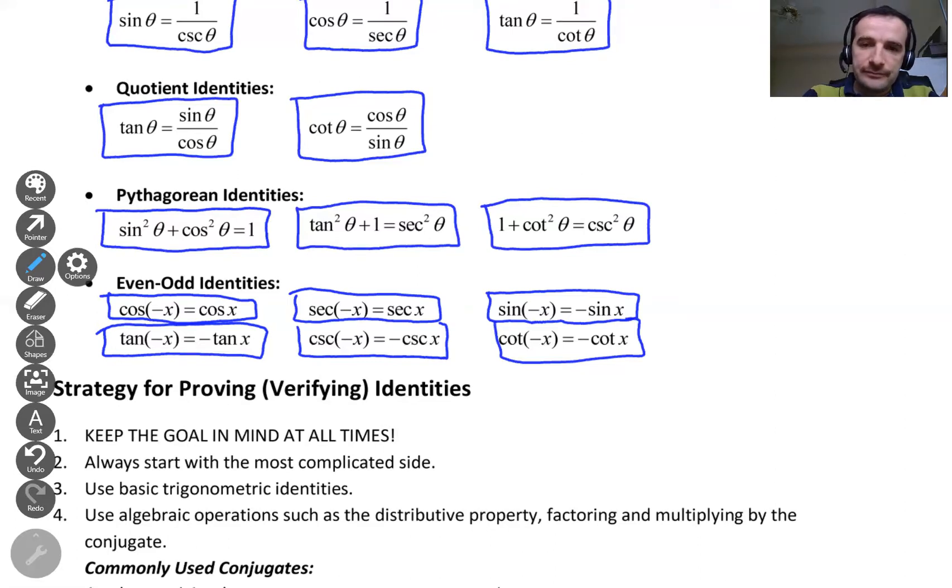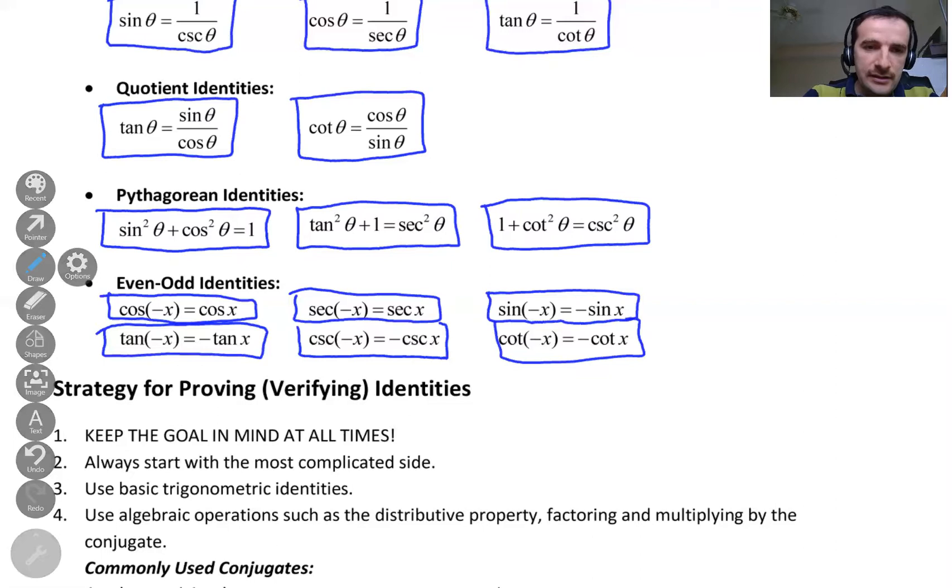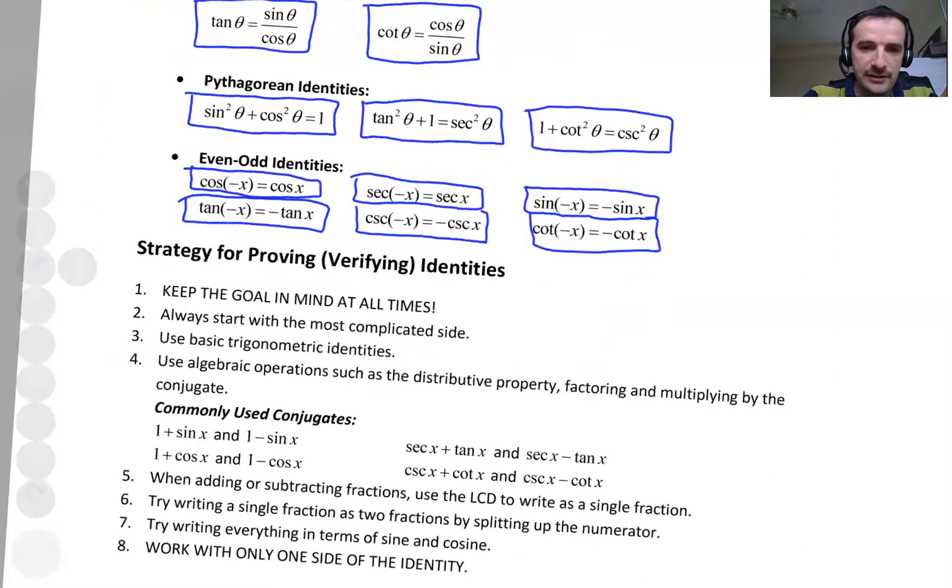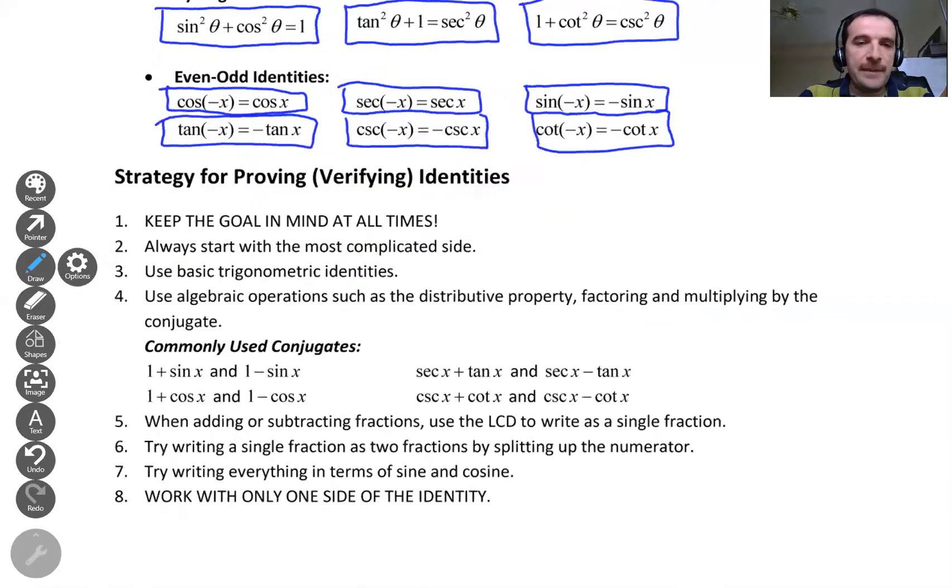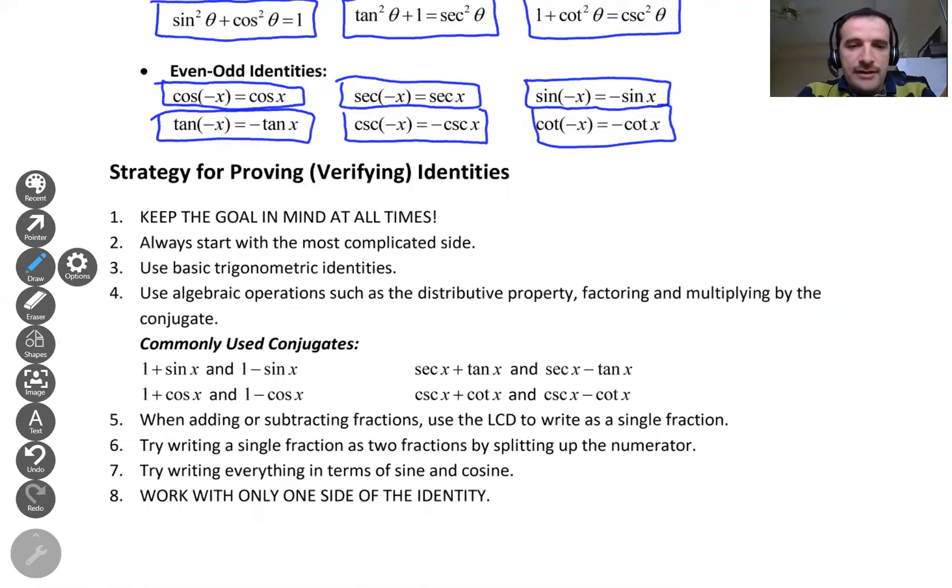So now, what will our strategy be to prove or verify identities? There are some nice tricks to do that. Maybe we can go over them quickly. Always start with the most complicated side. Use basic trigonometric identities. Use algebraic operations such as the distributive property, factoring and multiplying by the conjugate.